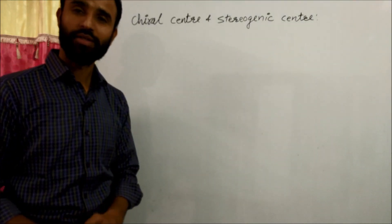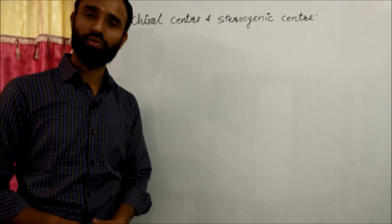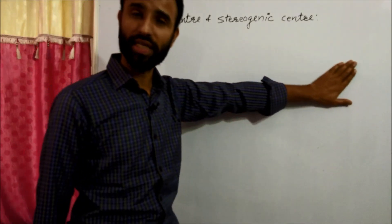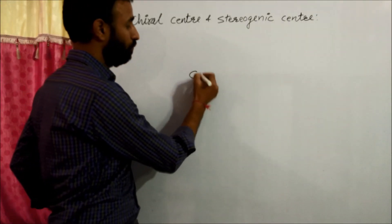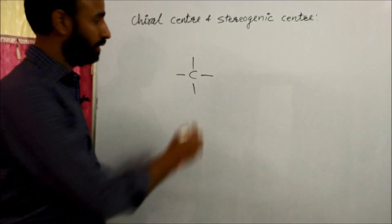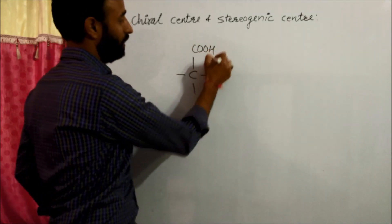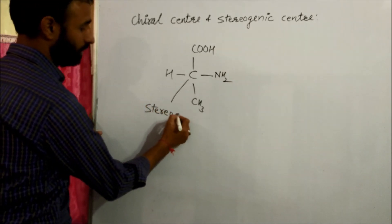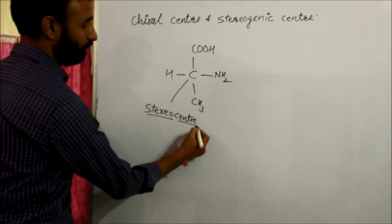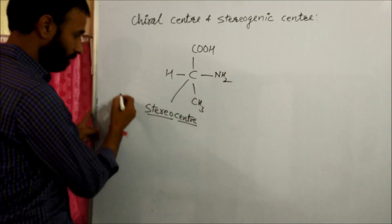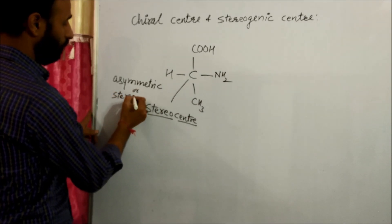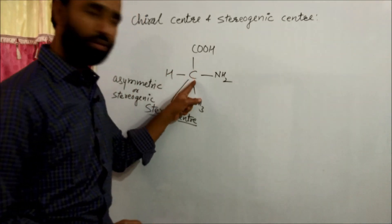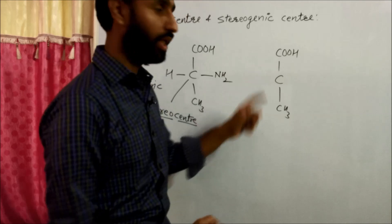Welcome back friends. This is the next part of optical isomerism. What is the difference between chiral center and stereogenic center? The carbon attached to four different atoms or groups is known as chiral carbon. This is one of the stereocenters, also known as asymmetric carbon or stereogenic center.